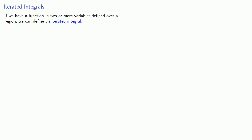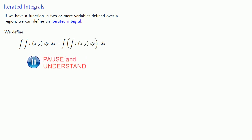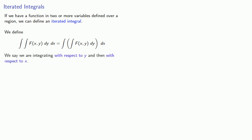Now if we have a function in two or more variables defined over a region, we can define an iterated integral — an integral that looks like this. We define this where parentheses mean to do the stuff inside first. We say that we are integrating with respect to y and then with respect to x.